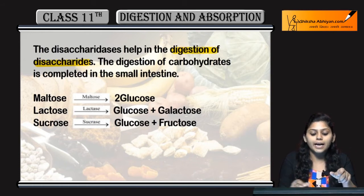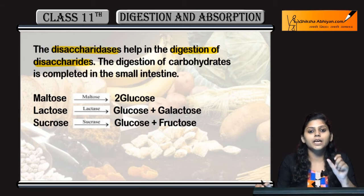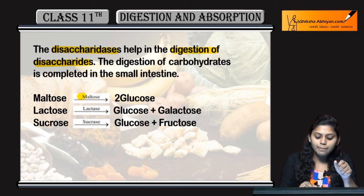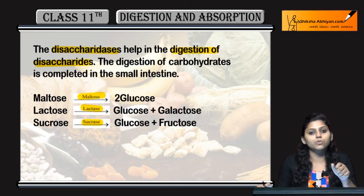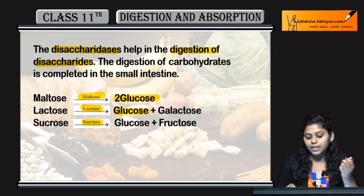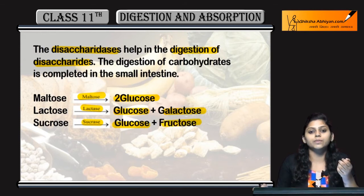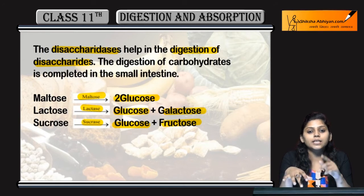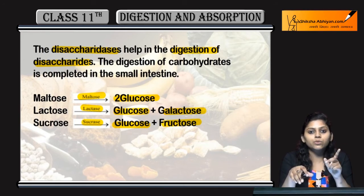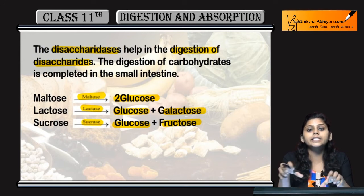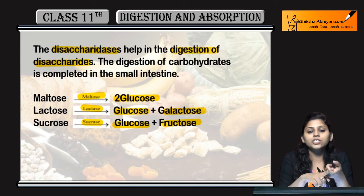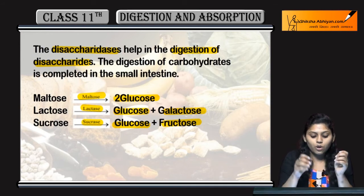The disaccharides present are maltose, lactose, and sucrose. Maltose is converted to glucose; lactose is converted to glucose and galactose; sucrose is converted to glucose and fructose. Digestion of carbohydrates occurs in the mouth and esophagus by salivary amylase, then pancreatic amylase and intestinal juices act in the small intestine. No digestion occurs in the stomach.